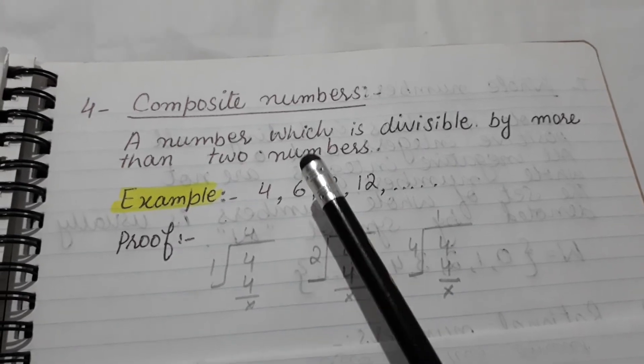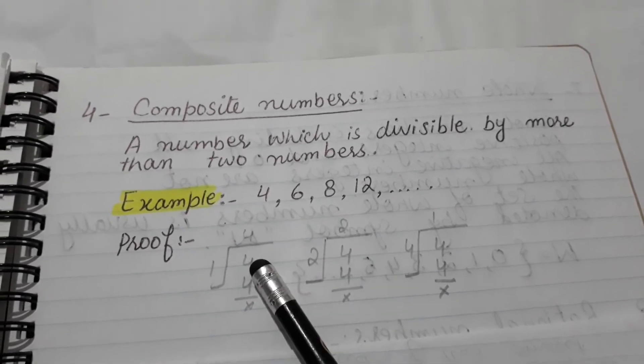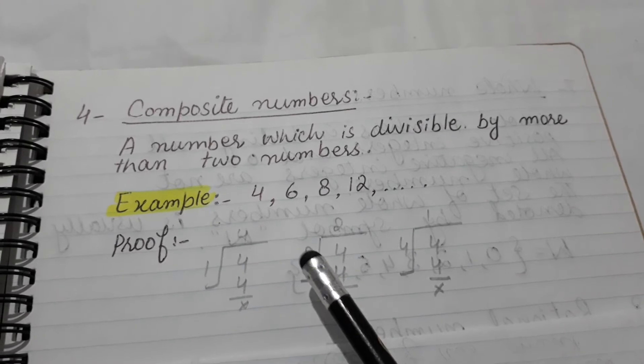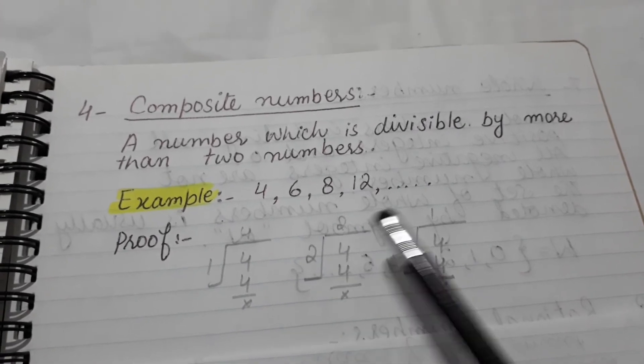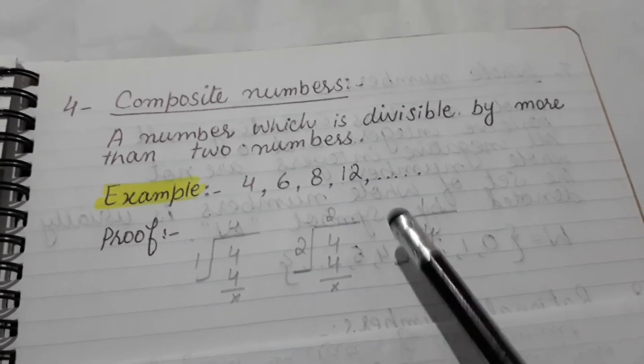Proof. We take 4. 1 4's of 4. Now we are dividing it from 2, 2 2's of 4. Now we are dividing it by 4, 4 1's of 4.